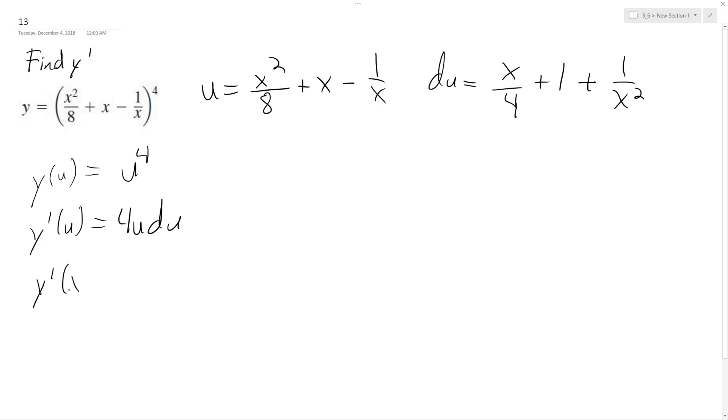So y prime of x ends up being equal to 4 times our u, which is x squared over 8 plus x minus 1 over x raised to the 4th, times our du, which is x over 4 plus 1 plus 1 over x squared.